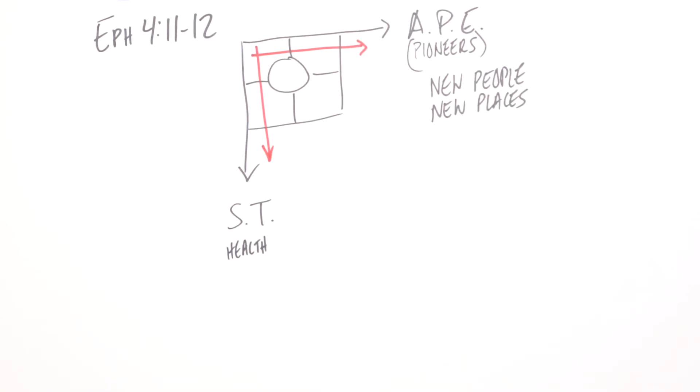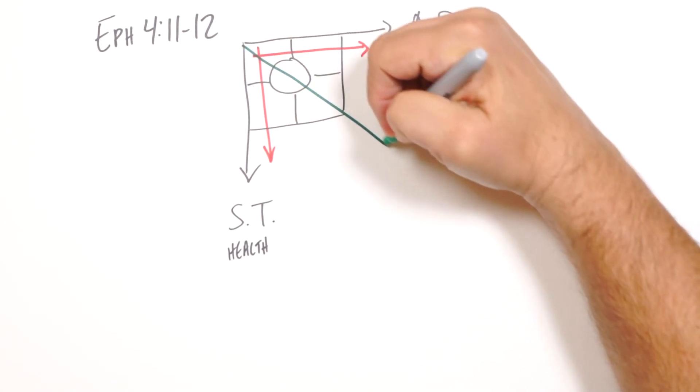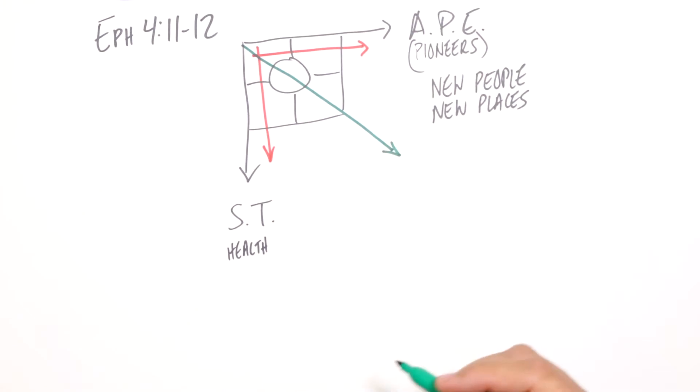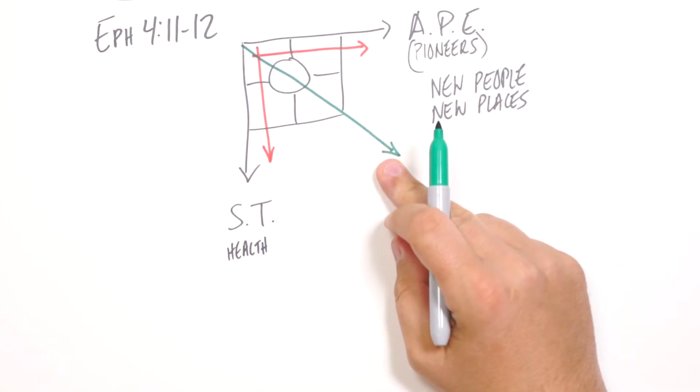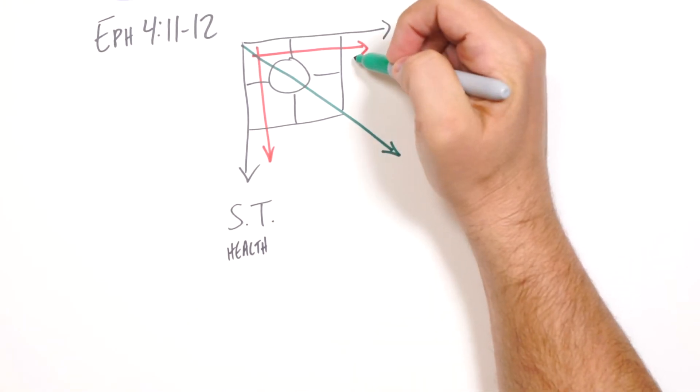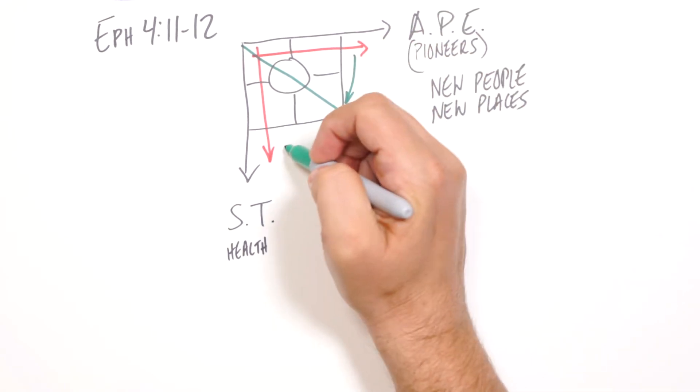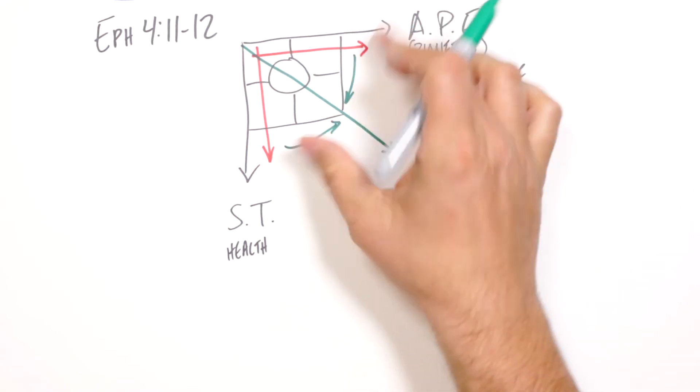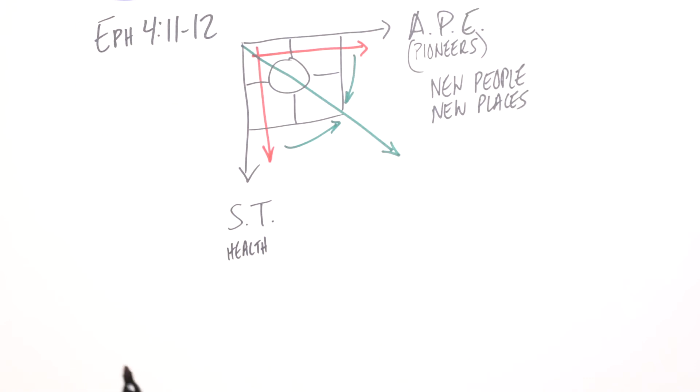But what true, healthy movement looks like is actually through field three, discipleship, pouring your life into people. And so we're seeing that it's when we have these two that are working together is where the healthiest movements are taking place among disciples and churches.